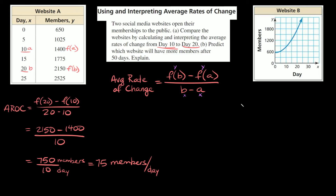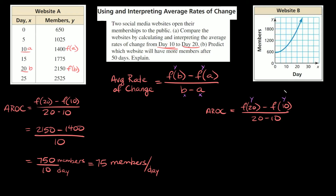Now let's figure out what it is for website B. The average rate of change for website B is going to be equal to F of B minus F of A, all over B minus A — the exact same formula. We want to know what our Y value is at F of 20, because we're interested in day 20, minus the starting point day 10, all over 20 minus 10. So what is our Y value at day 20 for website B? For day 20, the Y value looks pretty close to 1800, maybe just a little under 1800. We'll approximate and just say 1800 to make it a little easier.